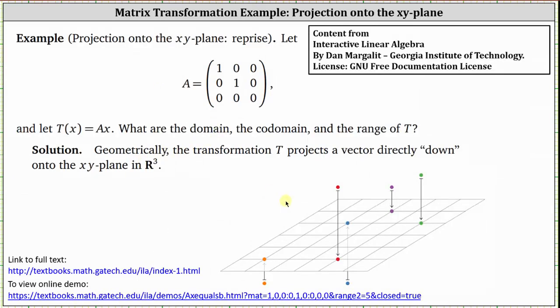Remember, we can view vectors as points where the point would be the terminal point of the vector in standard position. So geometrically, the transformation t projects a vector directly down onto the xy plane in R3.